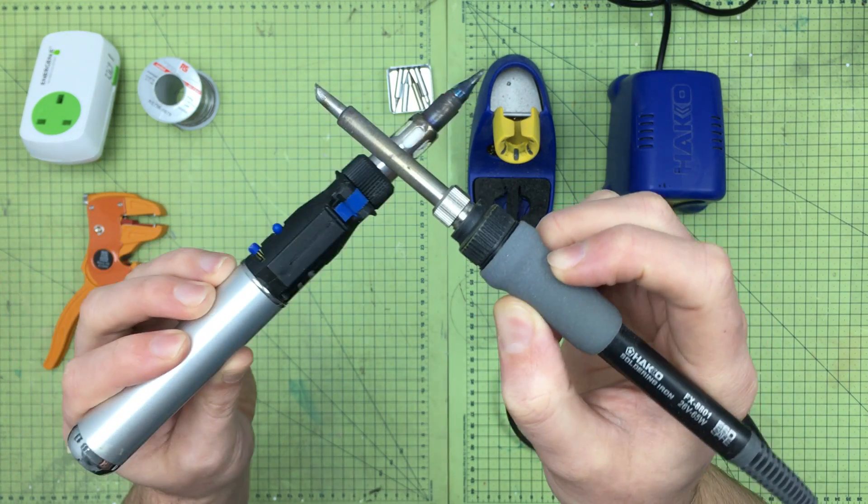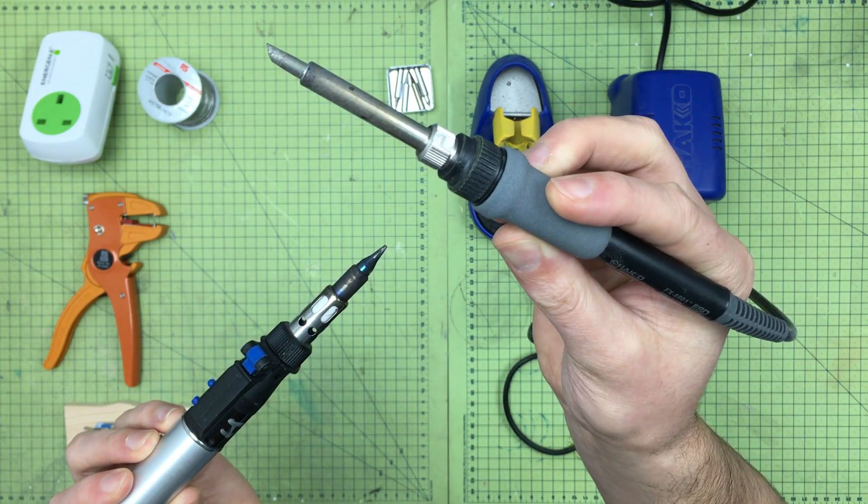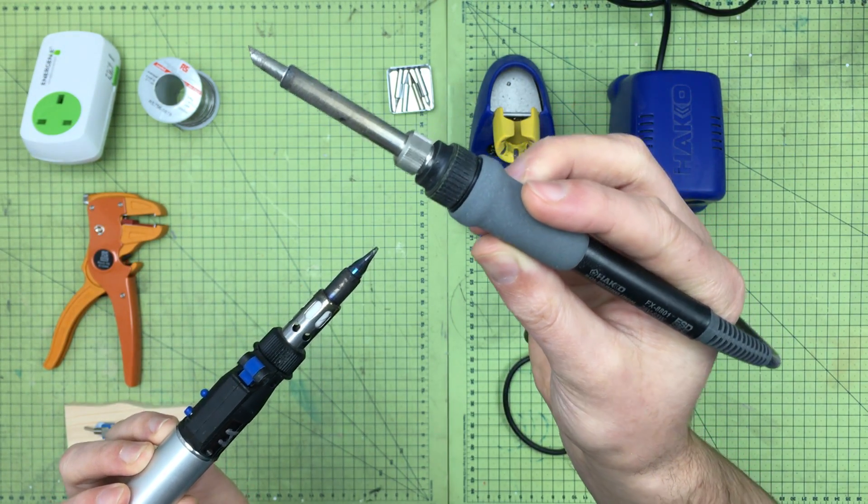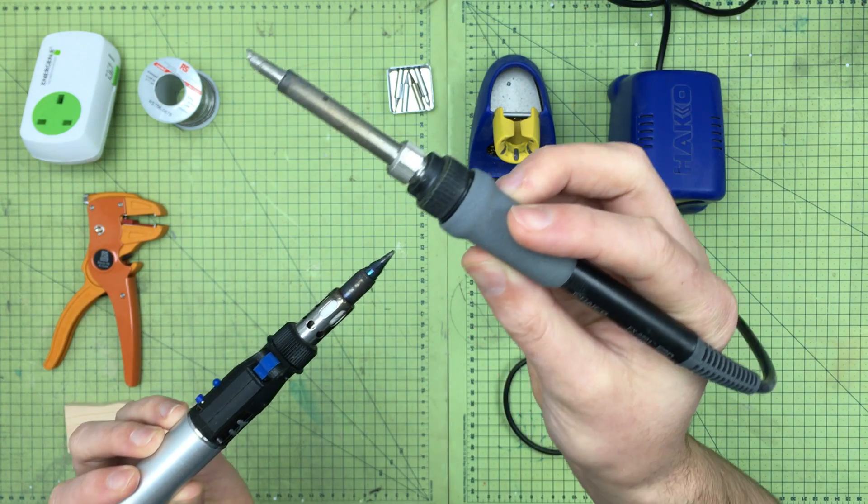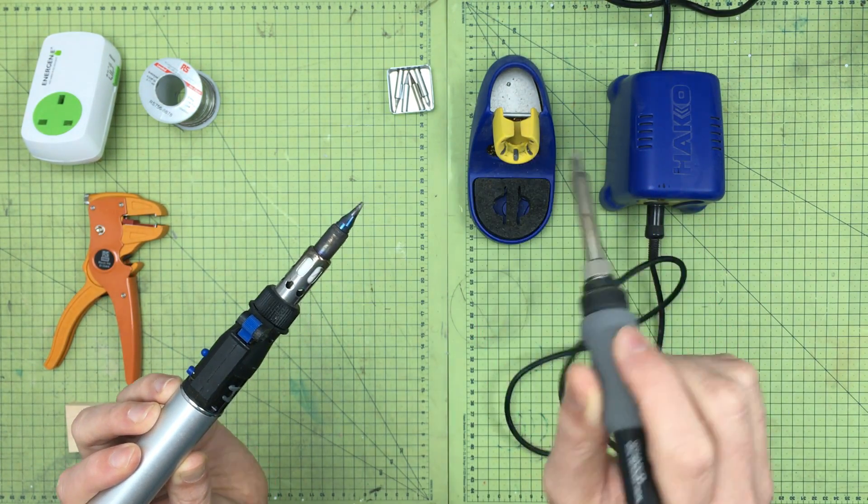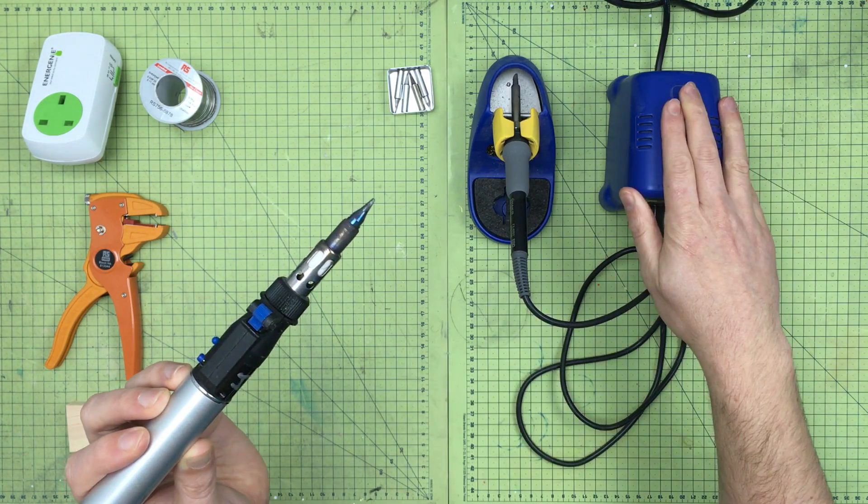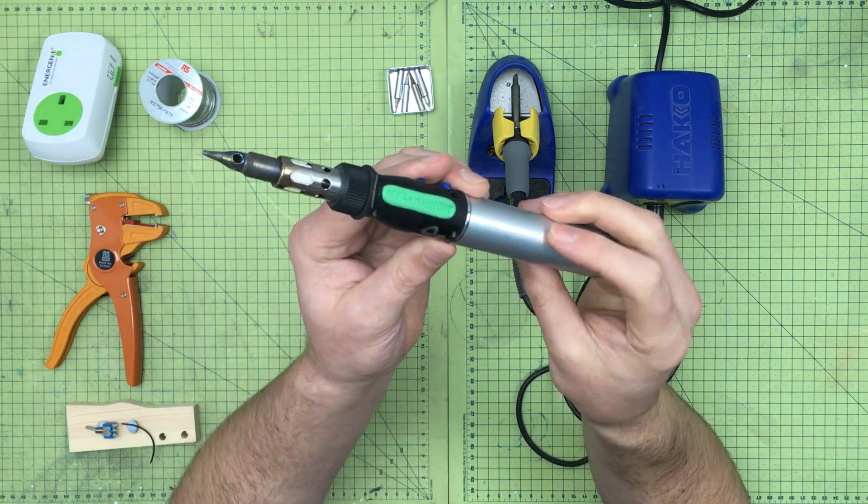Okay, so I thought I'd do a review of this, the Hakko FX888D, which is basically a Japanese make soldering iron. As you can see, it plugs into the wall and there's a temperature controller here, and this is a gas-powered Dremel.